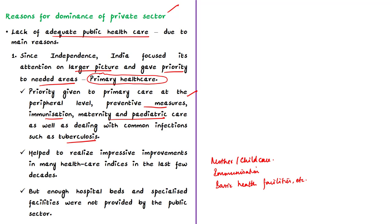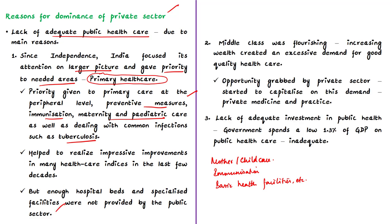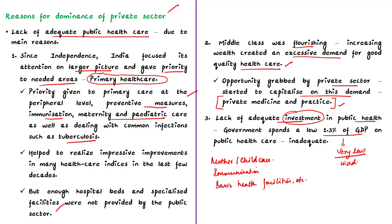While this approach helped improve many health care indices over the last few decades, during this period enough hospital beds and specialized facilities were not provided by the public sector. Additionally, a flourishing middle class created excessive demand for quality healthcare, which the private sector capitalized on — giving birth to private medicine and practice. The third reason is inadequate investment in public health; the government spends only 1.3% of GDP on public healthcare, which is grossly inadequate.